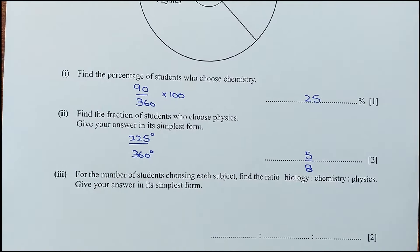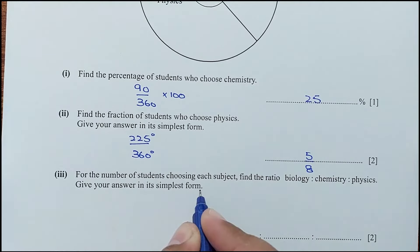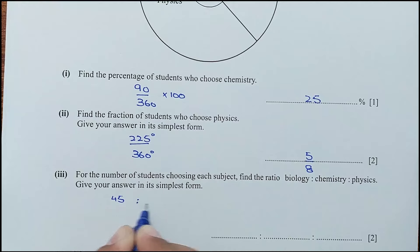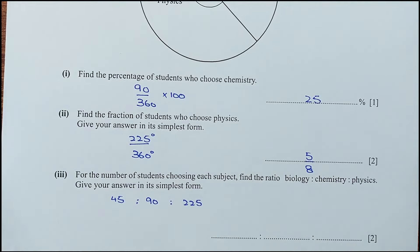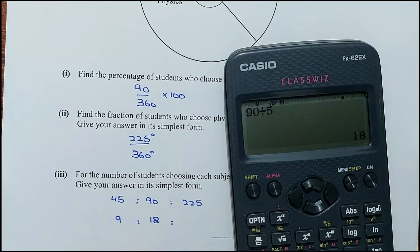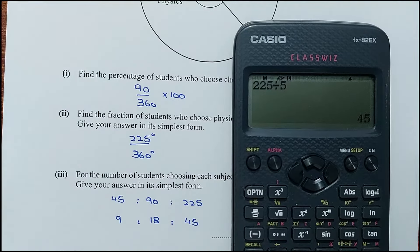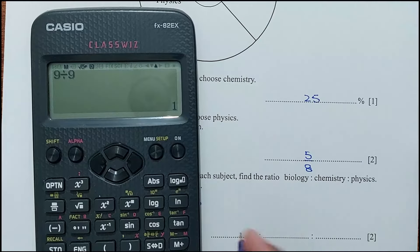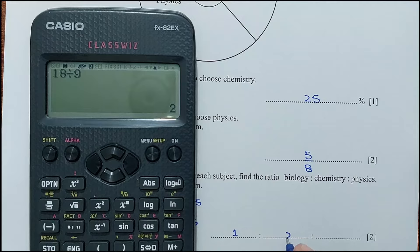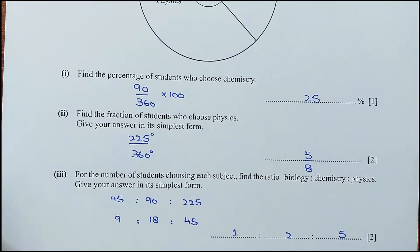For part 3, find the ratio biology : chemistry : physics in its simplest form. Biology is 45, chemistry is 90, physics is 225. Dividing all by 5 gives 9, 18, 45. Then dividing all by 9 gives 1 : 2 : 5.